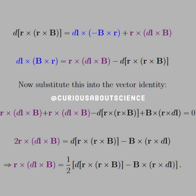Further simplifying: since the cross product is anti-commutative, we change the order but introduce a minus sign. The blue term, when shifted, gives DL cross B cross R, which equals the purple term minus the differential term we started with. Substituting this into the vector identity, we simplify to: R cross DL cross B equals one half of the difference. This will play an important role in the next step.